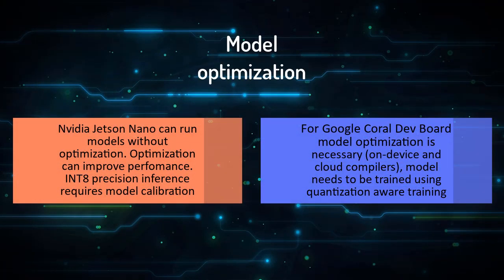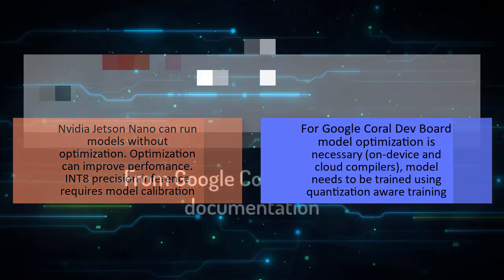On Jetson Nano you can run any model you use on a regular desktop GPU, but for better results you want to do some model optimization using TensorRT. For Google Coral Dev Board, model optimization is necessary. You can do it either using the cloud model compiler or on the device, and the model needs to be trained using quantization-aware training.